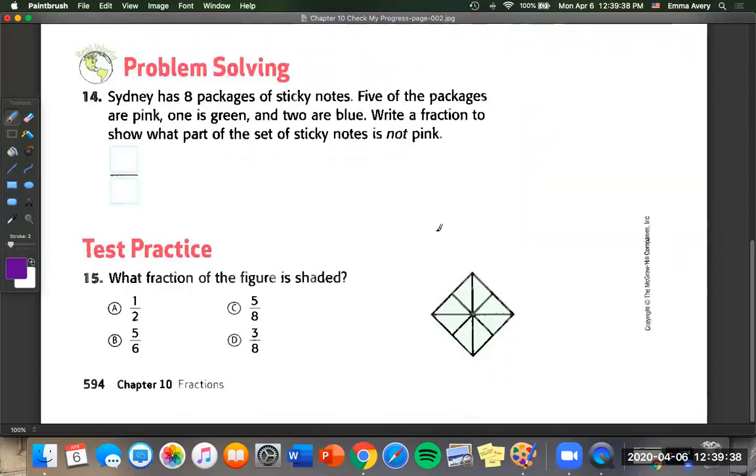Number 14. Sydney has eight packages of sticky notes. Five of the packages are pink, one is green and two are blue. Write a fraction to show what part of the sticky notes is not pink. So not is going to be our keyword here. Now, since we know that there are eight packages, let's draw a diagram that has eight parts.